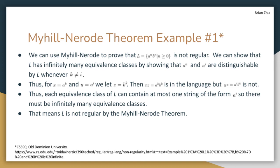Then, for each equivalence class of L can contain at most one string of the form a^i, so there must be infinitely many equivalence classes. This means that L is not regular by the Myhill-Nerode theorem.